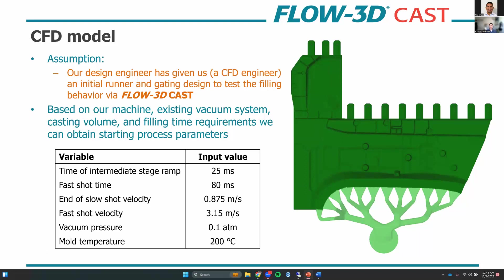Imagine we're all CFD engineers, and our fellow casting designer has given us an initial runner and gating design for the A-pillar, and they want us to test the filling behavior in Flow3D Cast and report back with recommended design changes. Based on the existing machine and high vacuum system, plus the known casting volume and filling time requirements, we've come up with process parameters to start our simulation models with. We start without the shot sleeve and fill from the biscuit, starting at the end of slow shot, then ramping up to fast shot in about 25 milliseconds once the runner is halfway full.